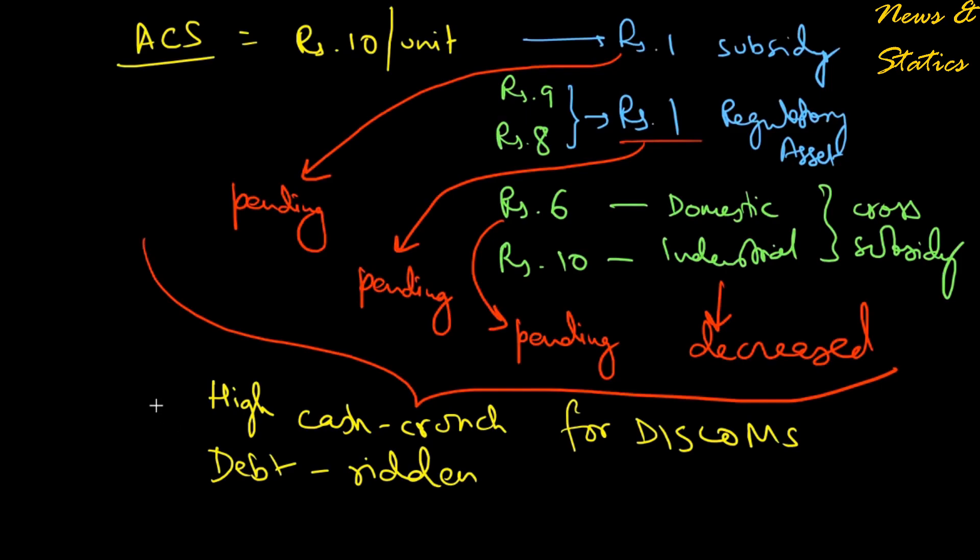The government of India came with a UDAY scheme in which it said 75% of these debts should be bought by the state government. The state government should convert it into bonds, guarantee it, and sell it to prospective buyers. The remaining 25% can be sold by the DISCOMs themselves. All this debt is converted into bonds which are sold, and the money is given to the creditors of these DISCOMs. But in financial year 2020 this UDAY scheme was completed and didn't actually meet its targets that well.